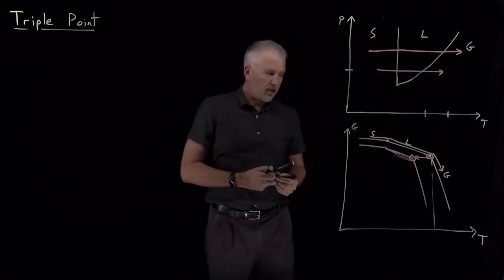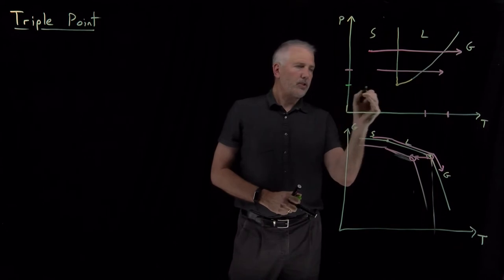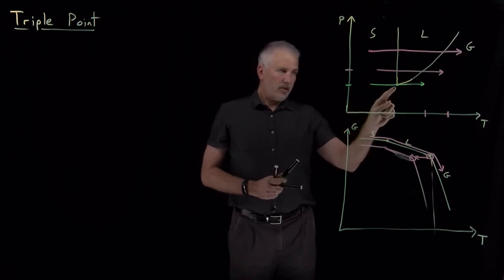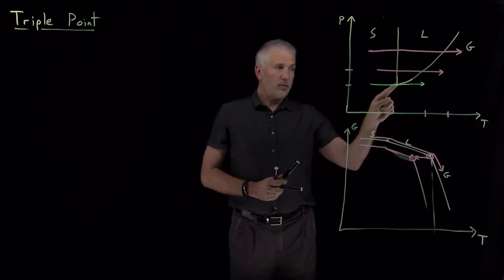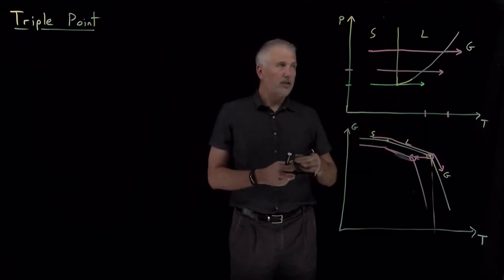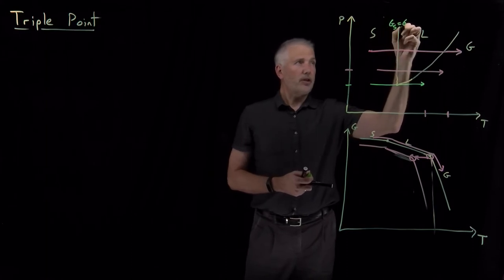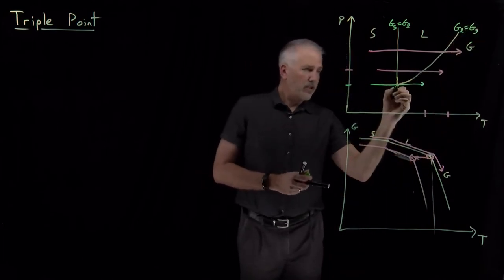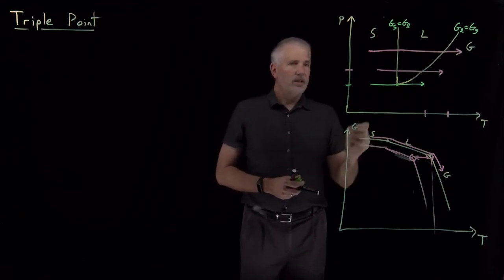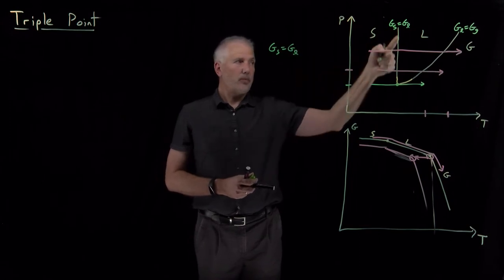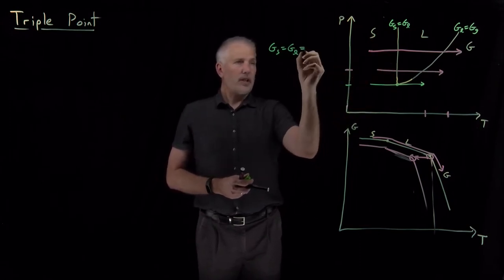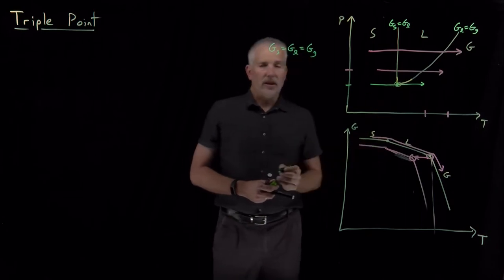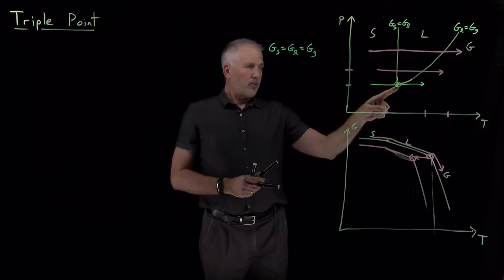To understand what goes on there, if we drop the pressure to the point where the solid changes to become the liquid, but at this point the solid and liquid free energies are equal to each other. So anywhere along this curve, the free energy of the solid is equal to the free energy of the liquid. Anywhere along this other curve, the free energy of the liquid is equal to the free energy of the gas. This point is on both of those curves, so at that point the free energy of the solid equals the free energy of the liquid — because we're on the solid-liquid coexistence curve — and that free energy of the liquid equals the free energy of the gas because we're on the liquid-gas coexistence curve. So all three phases are in equilibrium with each other at that point.